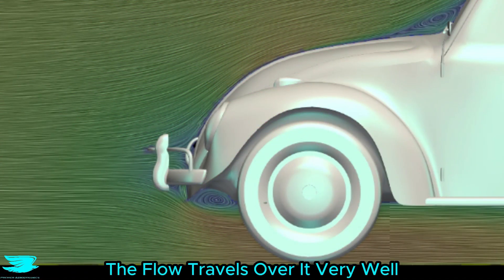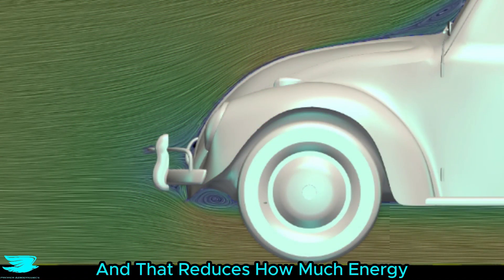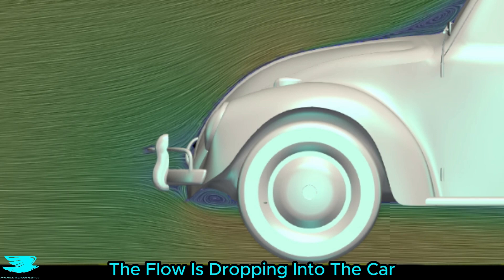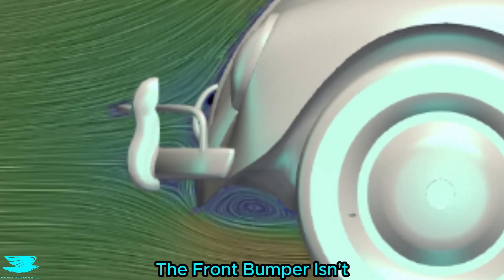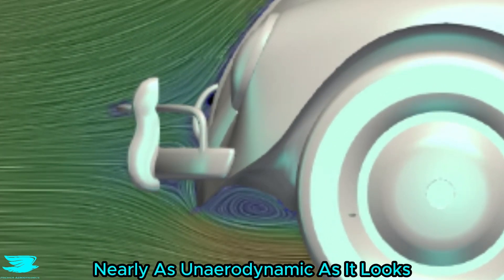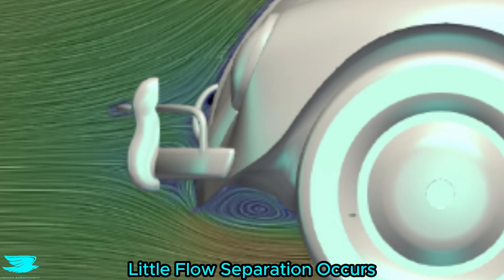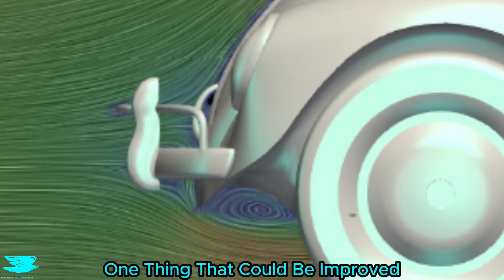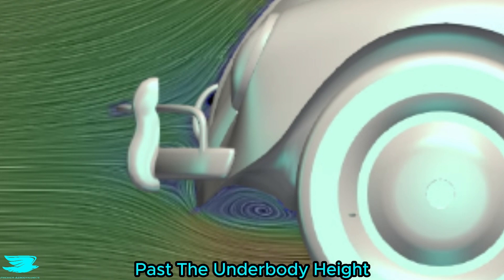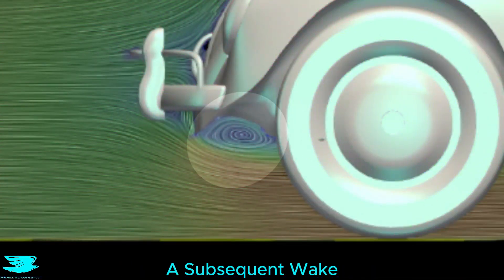But because the front is so rounded, the flow travels over it very well, and that reduces how much energy the flow is dumping into the car at this point. And surprisingly, the front bumper isn't nearly as un-aerodynamic as it looks, because the flow just moves around it. A little flow separation occurs. One thing that could be improved is how the front extends down past the underbody height. That causes a sharp edge and a subsequent wake.